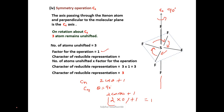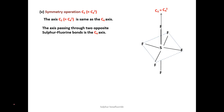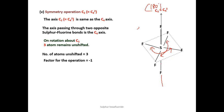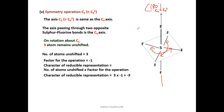For the C₂ (= C₄²) operation, this C₂ is collinear with C₄, and the angle of rotation is 180 degrees. Sulfur and two fluorine atoms on the axis remain unshifted — three atoms total. The other fluorine atoms get interchanged. The factor for C₂ is −1, giving a character of 3 × (−1) = −3.